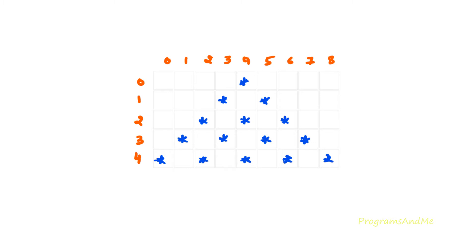Next we want to print stars in different rows and columns. To do that we can use a nested for loop - a for loop inside another for loop. We will take two for loops: one for row and another for column. First we take the for loop for row, and inside that we take the for loop for column, because we print row by row - completing each row's spaces and stars before moving to the next row.